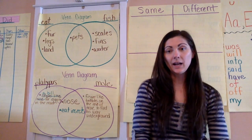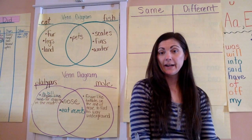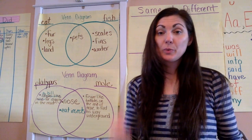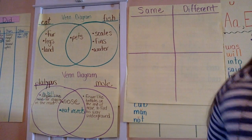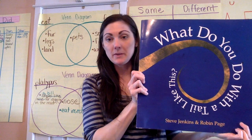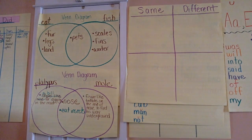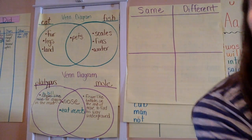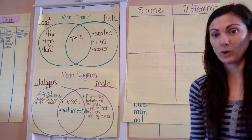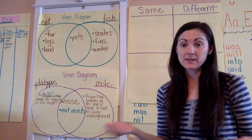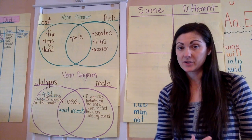Good morning again. Welcome back. We're going to do our shared reading now. Yesterday we started reading a book called 'What Would You Do With a Tail Like This?' And we read about the animals' noses and ears yesterday. Before we get into reading the book some more, I wanted to focus back on what our skill was that we were working on. So we were working on comparing and contrasting yesterday.